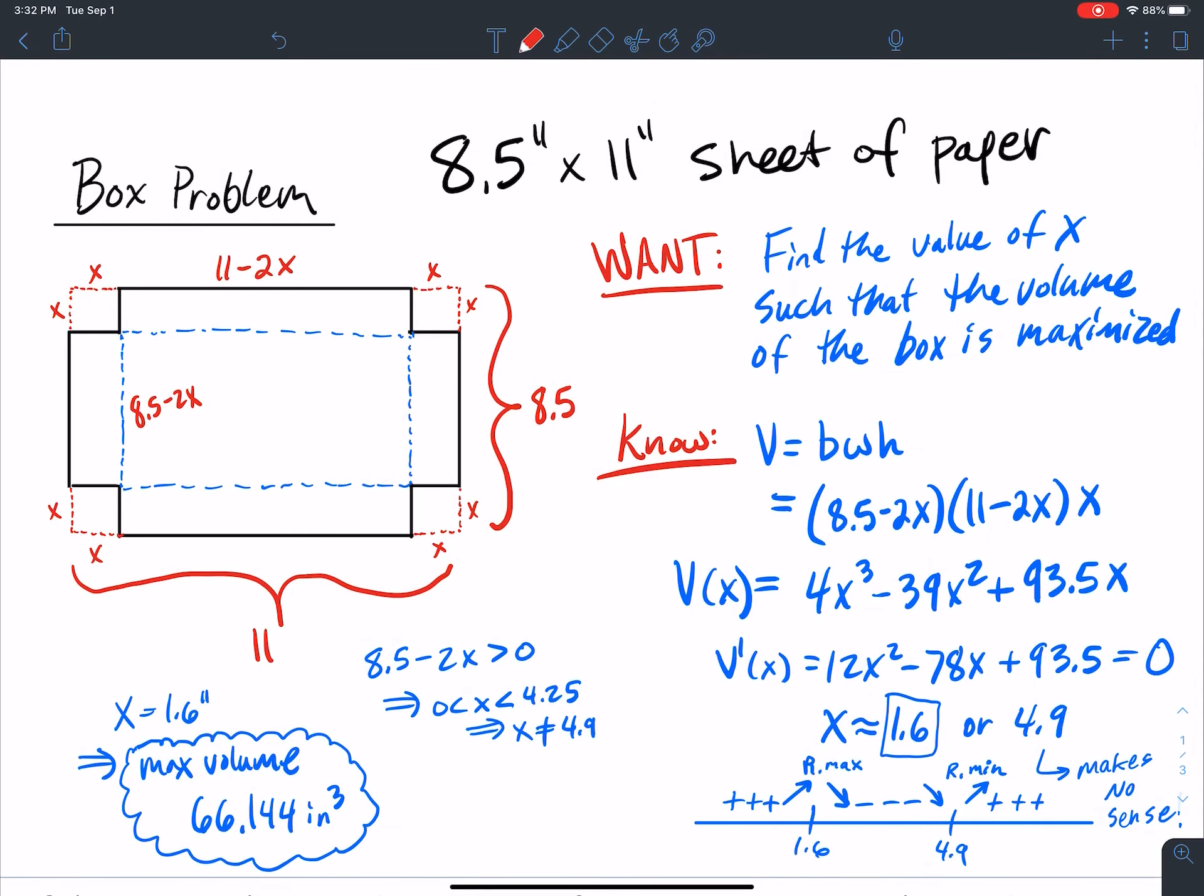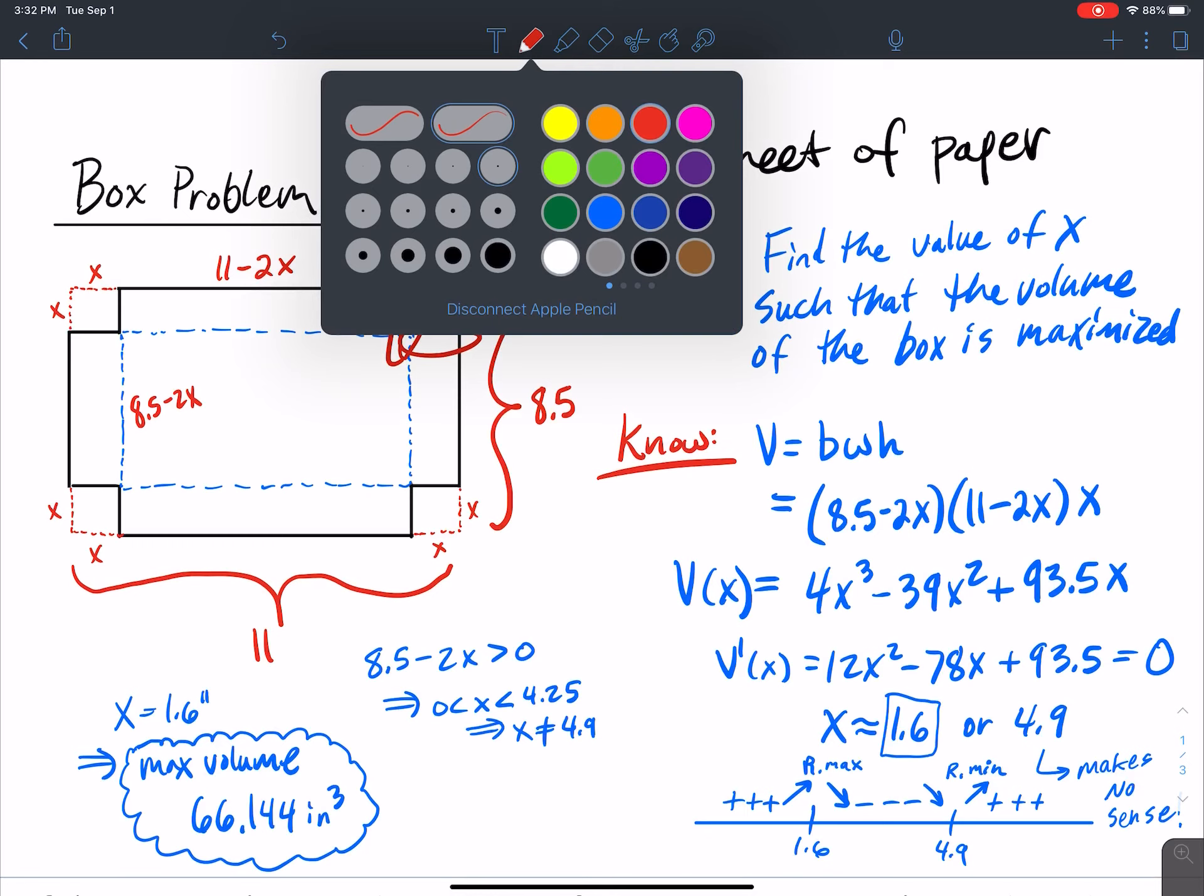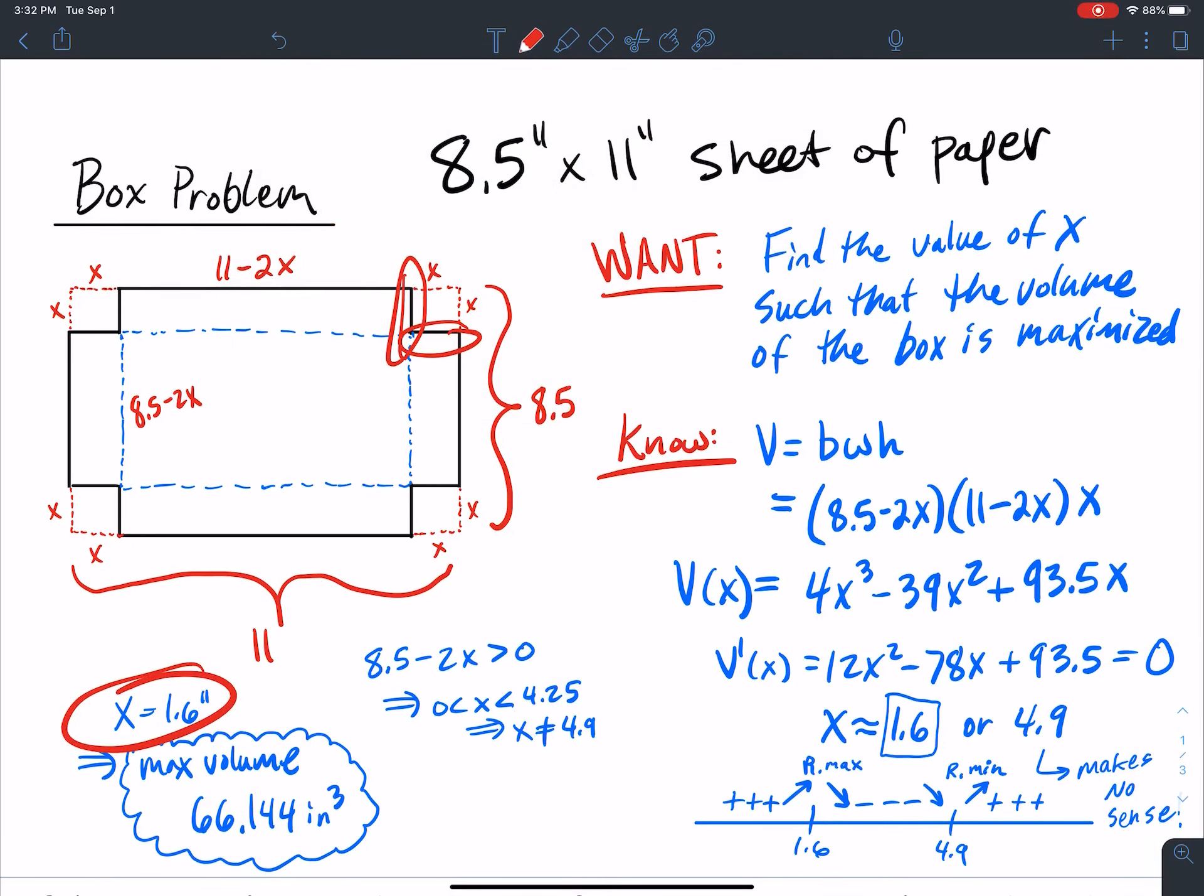So hopefully this is a cool example. If you want to, you can take a sheet of paper and then cut out a corner, and each corner that you cut out make it 1.6 inches. If you do that and you fold up the edges, you'll see what actually the box that has maximized their volume looks like.